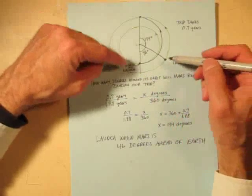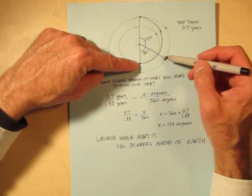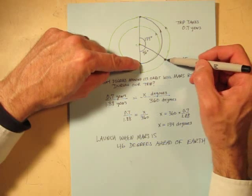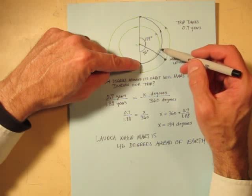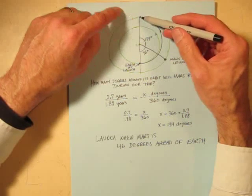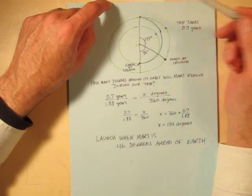When we launch our spacecraft, we want Mars to be 46 degrees ahead of us in its orbit. If we launch at that moment, then a Hohmann transfer orbit will carry us up at just the right speed so that we and Mars will arrive at the same point at the same time.